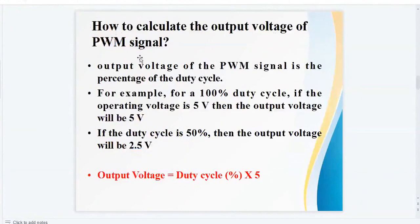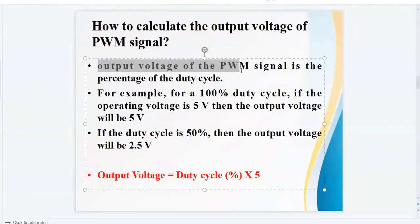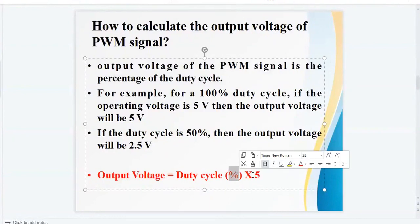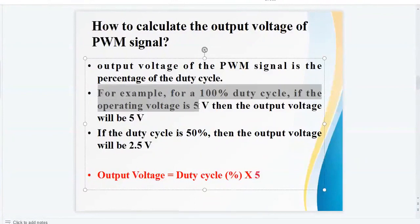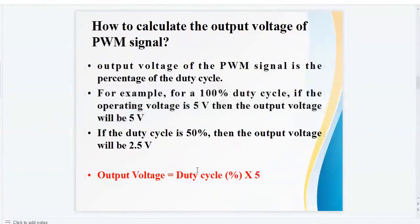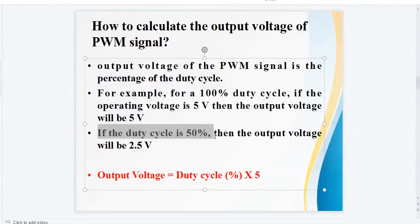Now how to calculate the output voltage of PWM signal? The output voltage of PWM signal is the percentage of the duty cycle. So output voltage equals duty cycle which is expressed in percentage multiplied by operating voltage. For example, for a 100% duty cycle, if the operating voltage is 5 volts, then the output voltage will be 5 volts. So in the given formula, you can put here 100% multiplied by 5, so we will get the answer 5 volts. If the duty cycle is 50%, then the output voltage will be 2.5 volts. So put the value here 50% multiplied by 5, we will get the output voltage 2.5 volts.